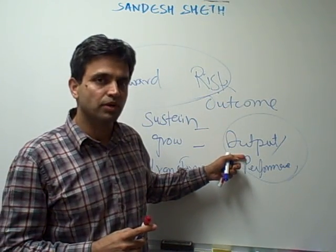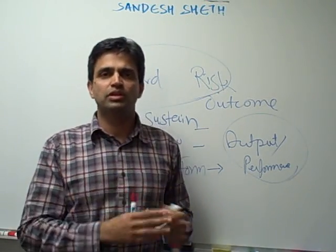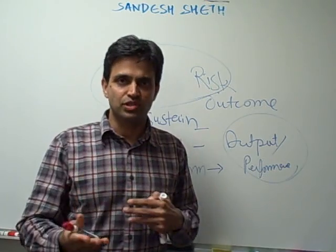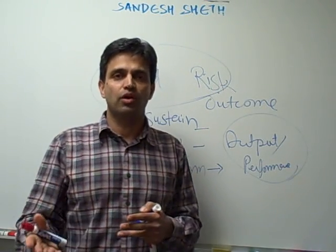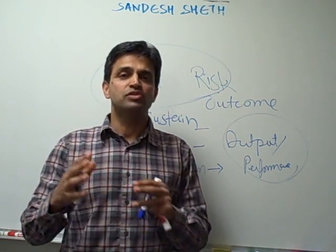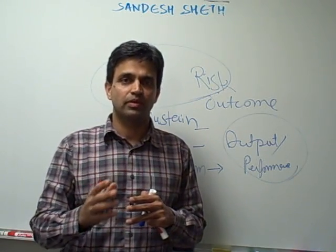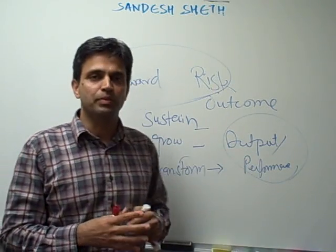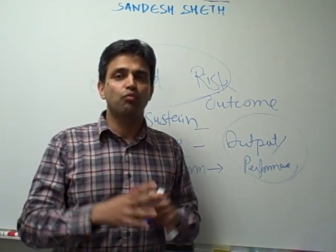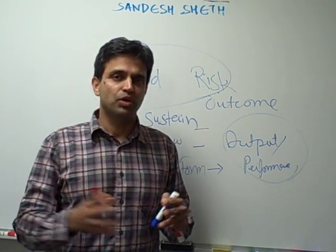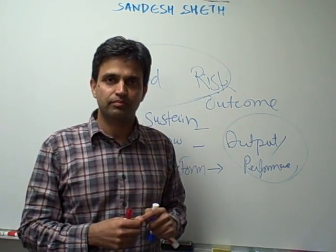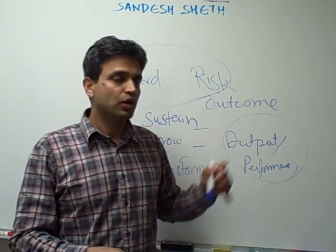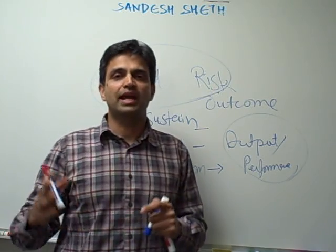The output measures could further be classified into process measures and activity measures. For example, the number of hours invested by physicians for vaccinating the children could be a process measure, and the amount of money spent on the vaccinations could be an output measure. Just observing the output measure would not help an organisation because they do not indicate what the outcome is. They help only if they are based on proper, timely feedback to improve the outcome measures, but in themselves they do not actually indicate the outcome.